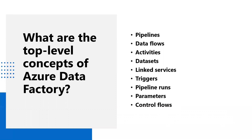What are pipelines? A data factory can have one or more pipelines. A pipeline is a logical grouping of activities to perform a unit of work. Together, the activities in a pipeline perform a task. For example, a pipeline can contain a group of activities that ingest data from an Azure blob and then run a Hive query on an HDInsight cluster to partition the data.